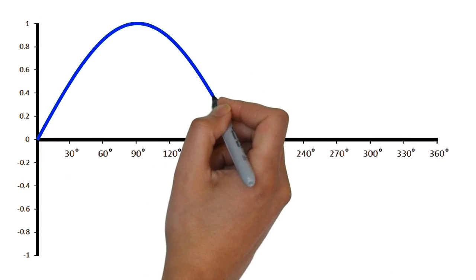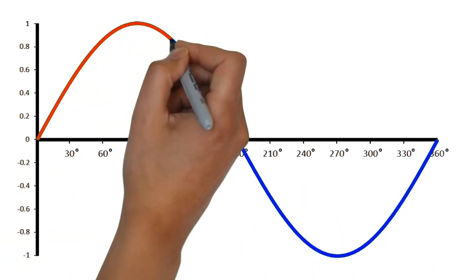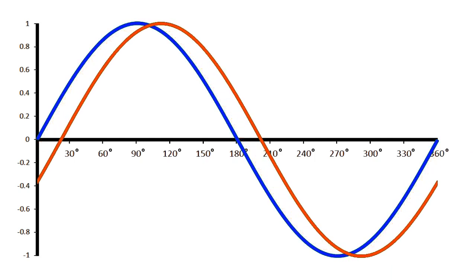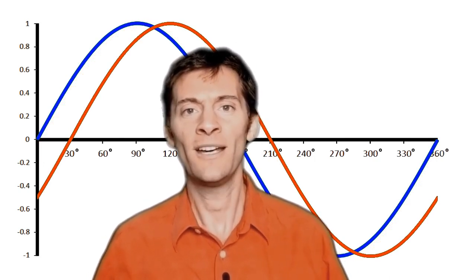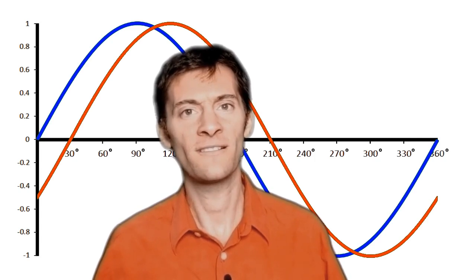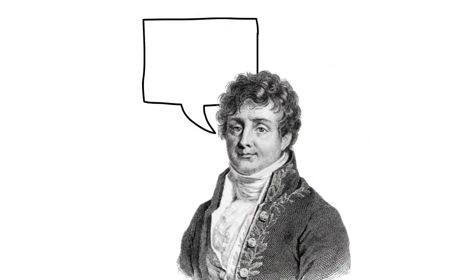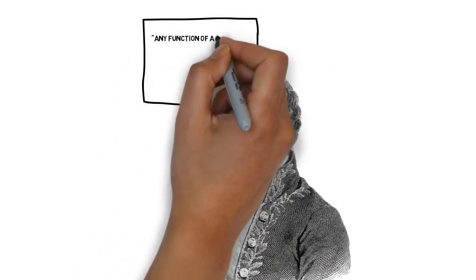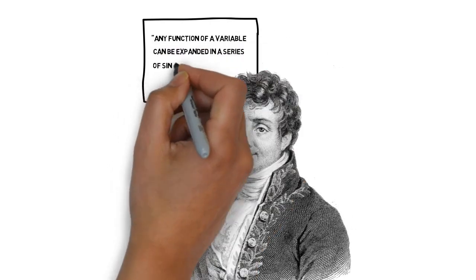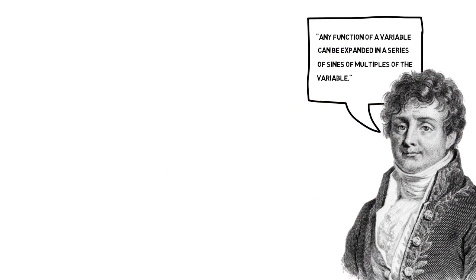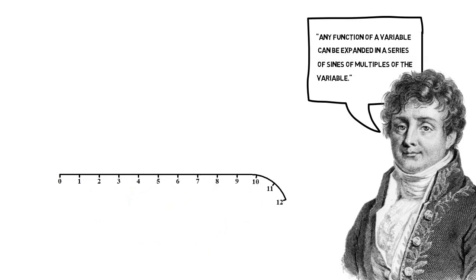So how do we represent this shift in phase mathematically? Let's take two sine waves. We'll draw our first wave in blue, and it has a phase of zero. The other we'll draw in red, but shift it by 30 degrees. Now hang on a second — we've just been talking about changing the phase of a signal by shifting it in time. How come we're suddenly talking about angles? Well, remember what Fourier said about signals in general: any function of a variable can be expanded in a series of sines of multiples of the variable. Our variable — the thing that goes on the x-axis — is time, as we are talking about sound signals.